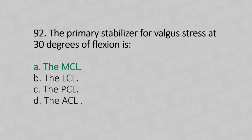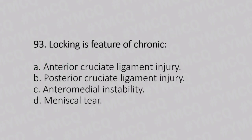Now let's move to question number 93. Locking is a feature of chronic. Option A: anterior cruciate ligament injury. Option B: posterior cruciate ligament injury. Option C: anterior medial instability. Option D: meniscus tear. And the answer is Option D, meniscus tear.